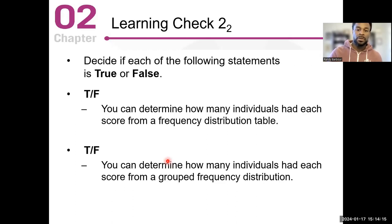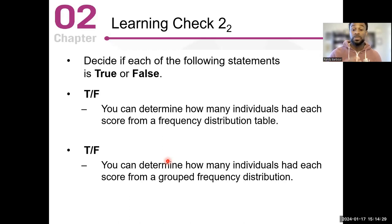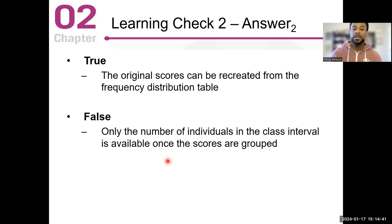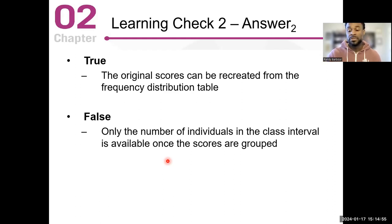True or false: you can determine how many individuals had each score from a frequency distribution table — that should be true. The second one says you can determine how many individuals had each score from a grouped frequency distribution table — that should be false. When you talk about a grouped frequency distribution table, you're losing a lot of information, so you don't know the number of scores for each individual person.